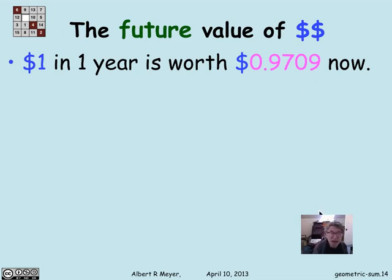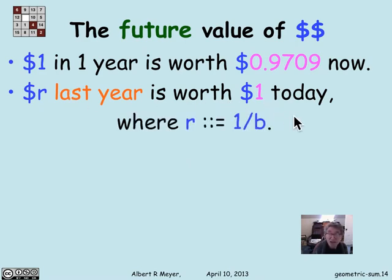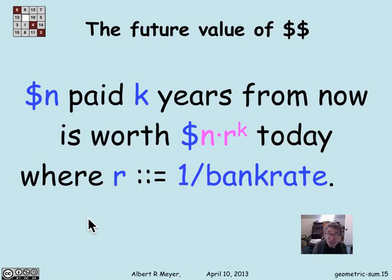We can shift perspective and think back a year. How much money did I need last year to be worth $1.00 today? By the same reasoning, I need B times R to equal $1.00, so R equals 1 over B — R is 1 over the bank rate. So R dollars a year ago is worth $1.00 today. By the same reasoning, n dollars paid in two years is worth n times R paid in one year, which is worth n times R squared today. Iterating this, a value of n dollars paid in k years is worth n times R to the k today, where R equals 1 over B.